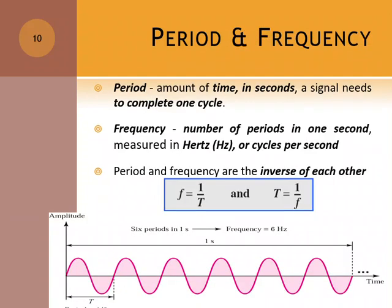Second one, period and frequency. What does it mean by period? It means the amount of time in seconds a signal needs to complete one cycle. The time taken to complete one cycle.